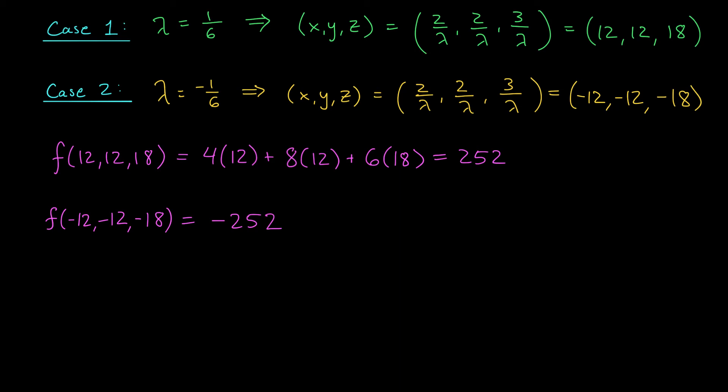Finally, we have to ask ourselves, what about critical points inside the region, right? We've maximized and minimized our function on the boundary, but what about at critical points inside? Well, you can actually see here, our function isn't going to have any critical points inside. The gradient of F is 4, 8, 6, so the partial derivatives exist everywhere, but they're never zero, so we don't have critical points to worry about.